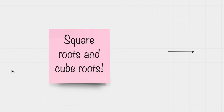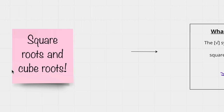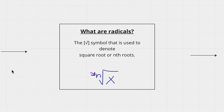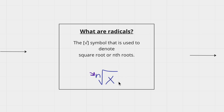My name is Sia and today I'm going to talk about square roots and cube roots. So let's talk about what radicals are. The symbol used to denote square roots or nth roots basically looks like this, and is called a radical.